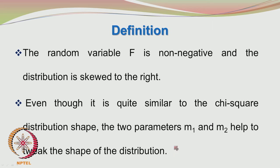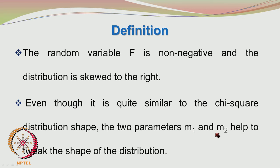The random variable F is non-negative and the distribution is skewed to the right. So the probability distribution function when plotted does not give a symmetric curve; it gives a curve skewed to the right, similar to the chi-square distribution shape. The two parameters M1 and M2 help to tweak the shape of the distribution.